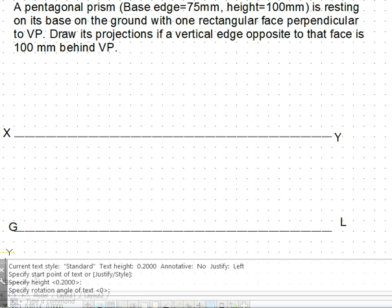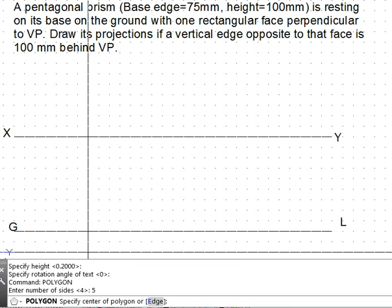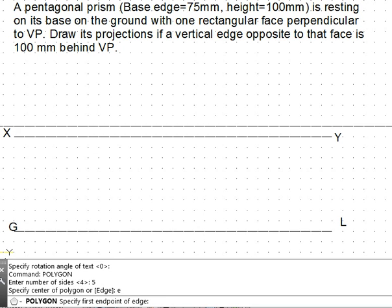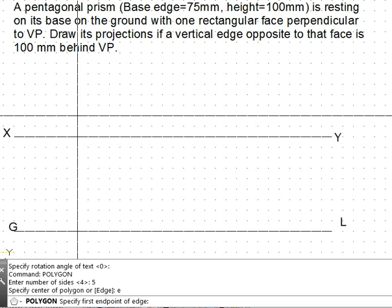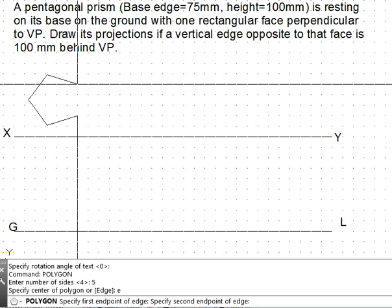We start with the top view. The polygon will be available, polygon with 5 sides because we have to draw a pentagon using the edge method. The base edge is 75 and that is how we start.